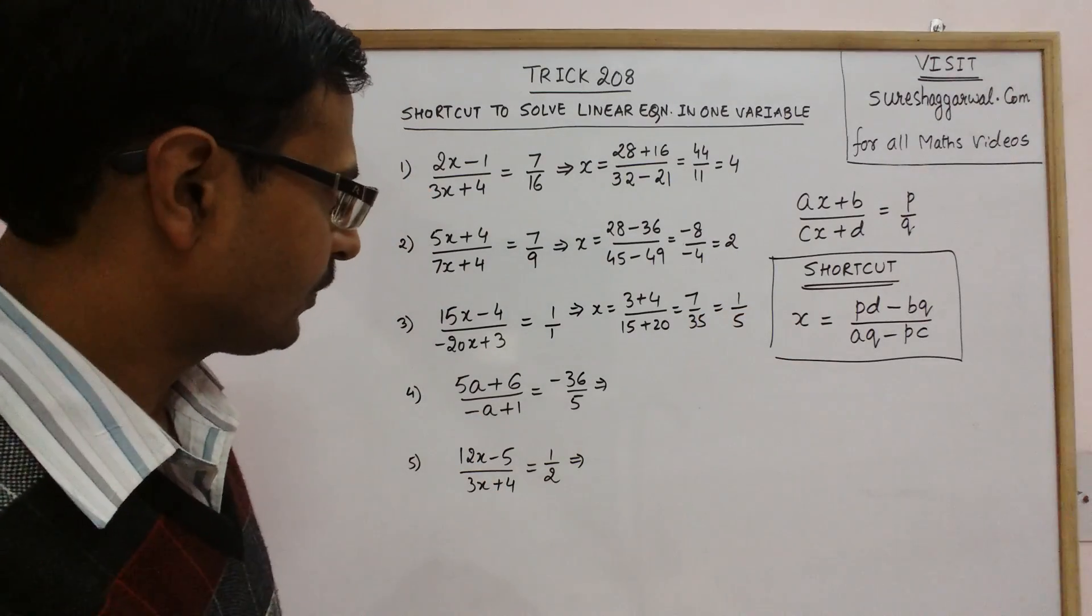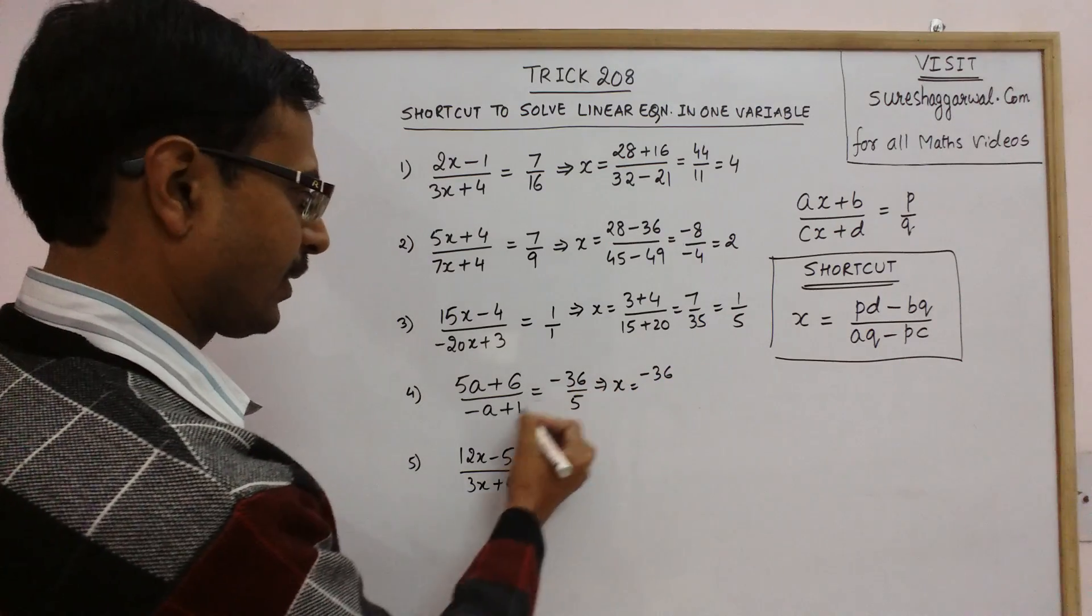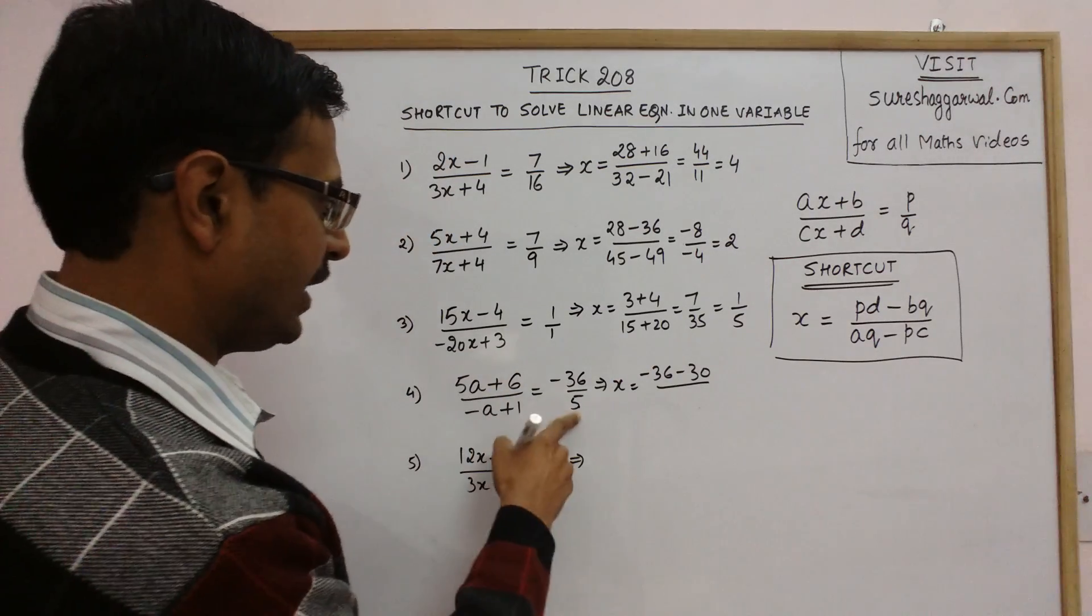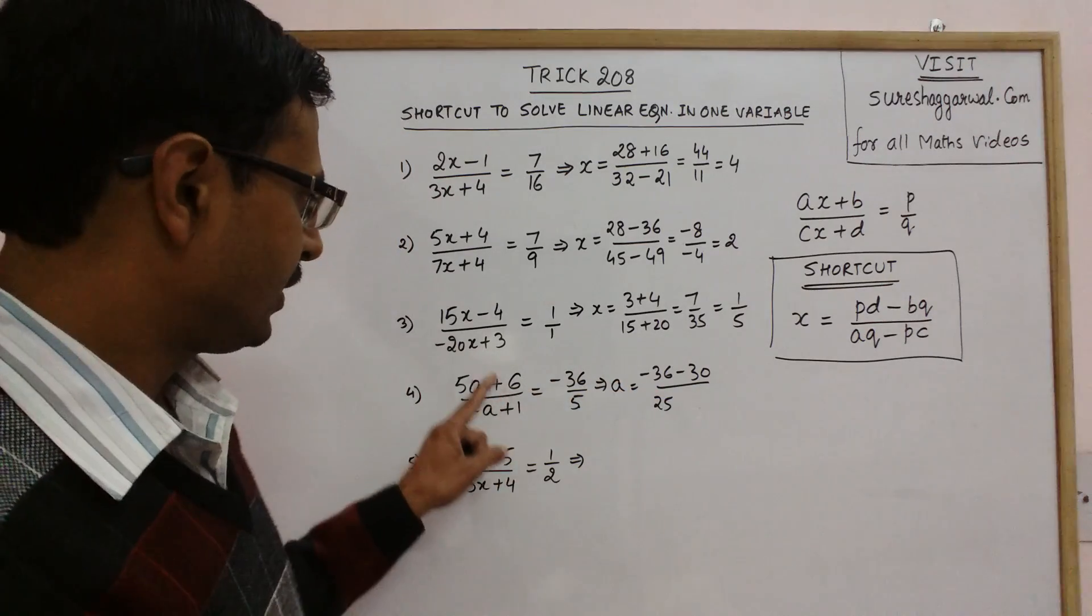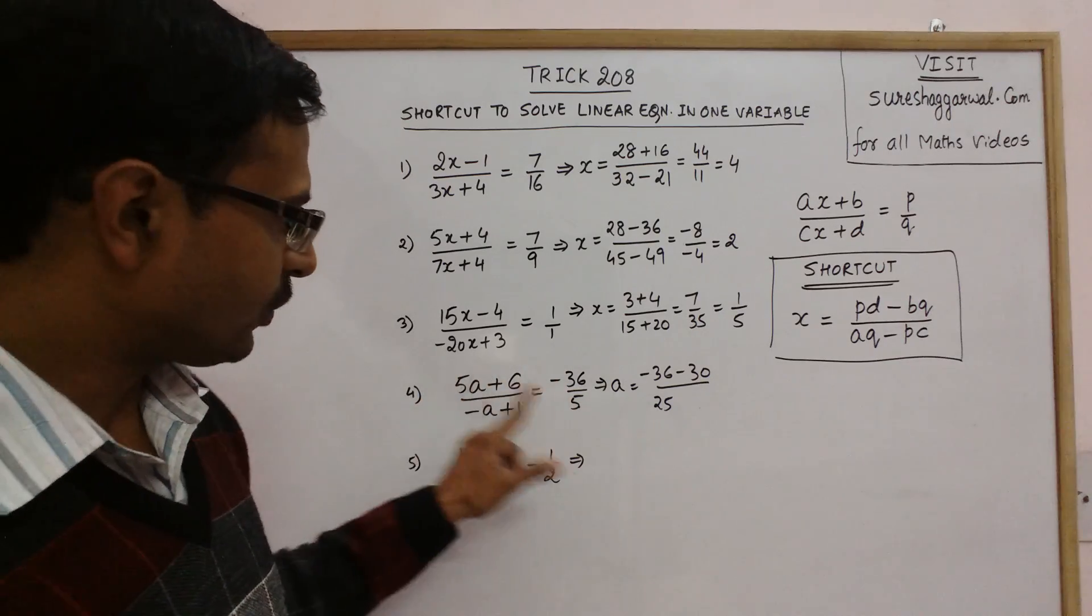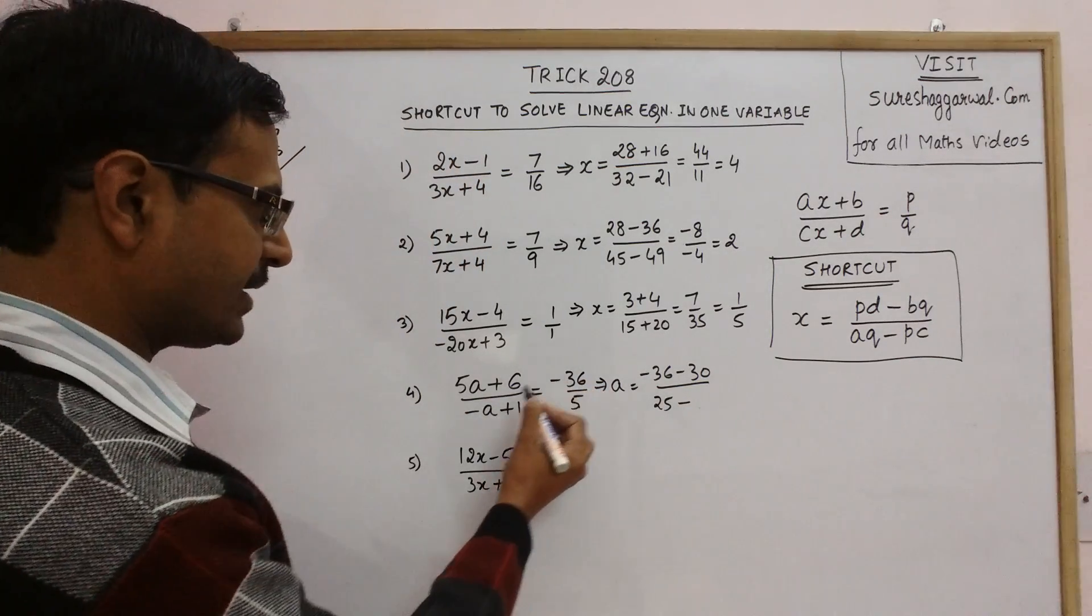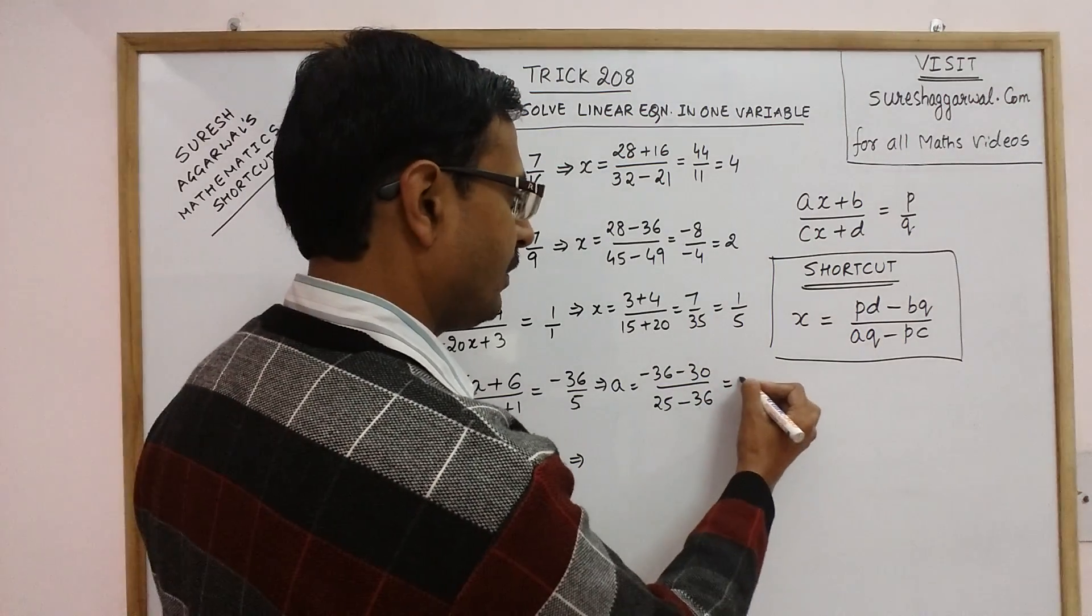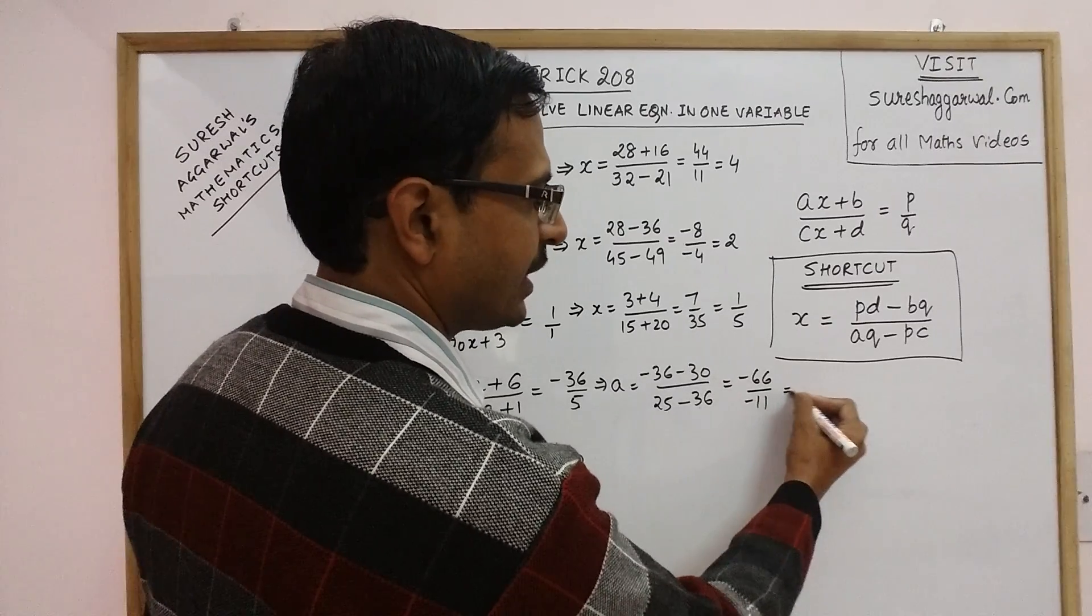Likewise you can solve this here now. See pd, this is minus 36 and minus 30 upon aq 25. Here we have the variable as a, so we are finding the value of a. So minus 36 minus 30 in the numerator and in the denominator you have 25 minus the final term is pc. So minus 36 into minus 1 is 36. This is minus 66 upon minus 11. So you get the answer as 6.